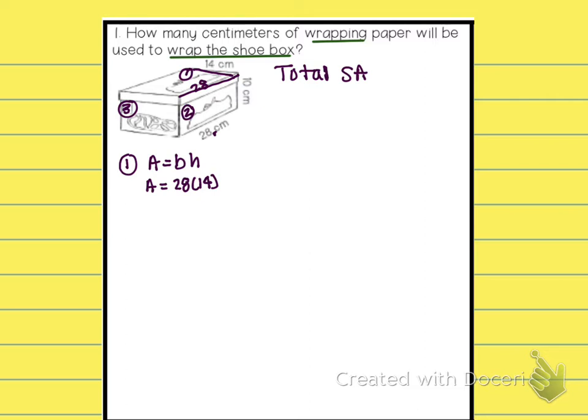For the second one, which is right here, we have this height, which is 10, and this base, which is 28. So, area equals base times height, and area equals 10 times 28.